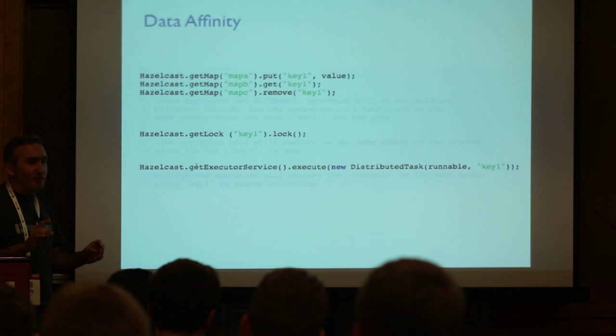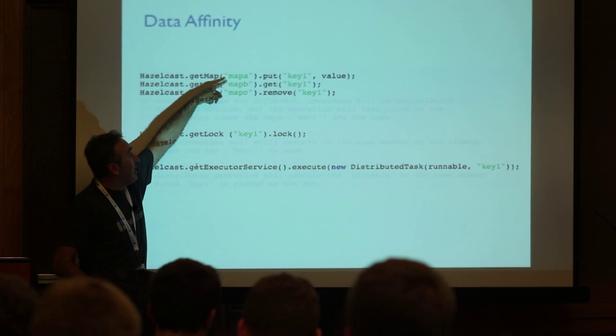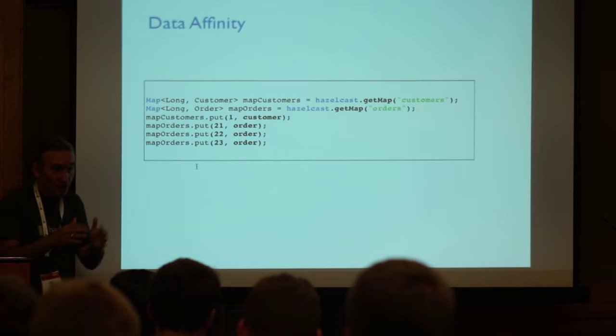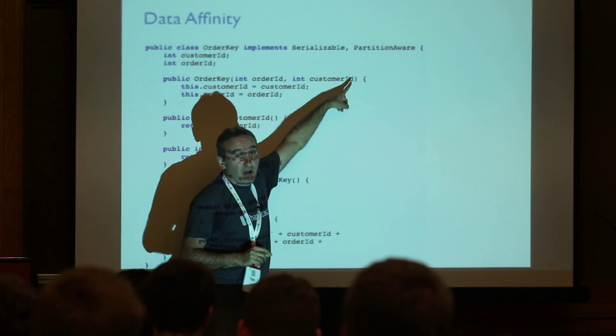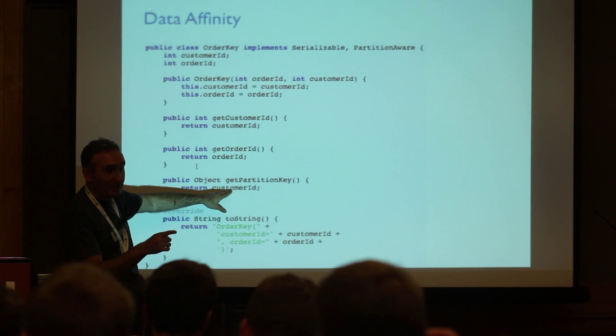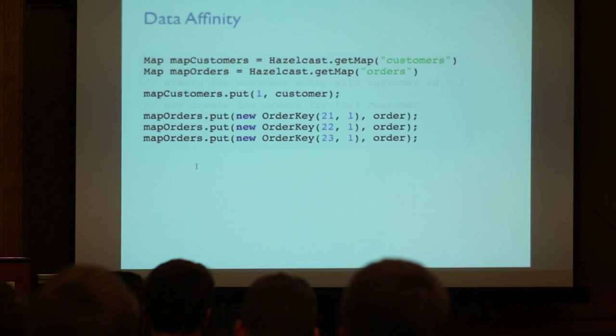Data affinity: as long as the keys are the same, data will stay on the same node — we don't care about map names, we care about keys. If you want orders and customers on the same node, you need a partition-aware key that tells us where this entry should live. The partition key points to the customer ID, so use that as the key to find the owner.